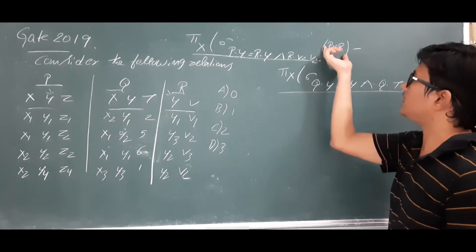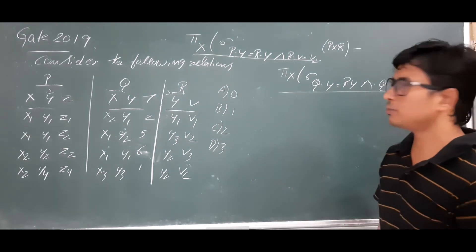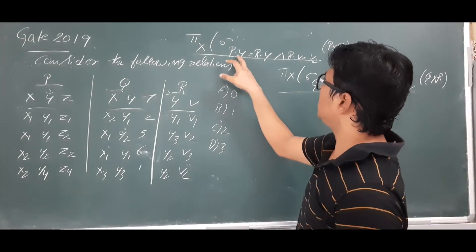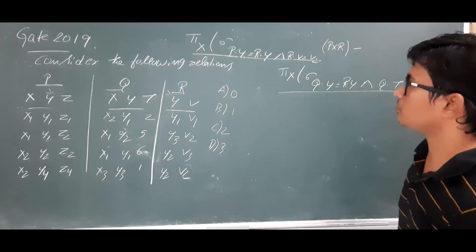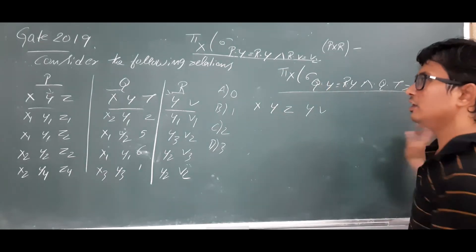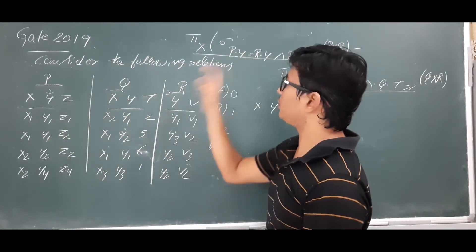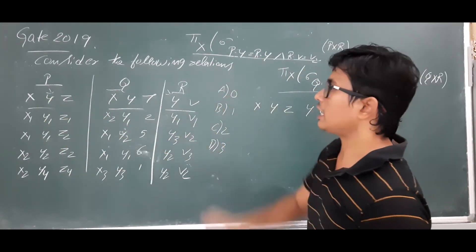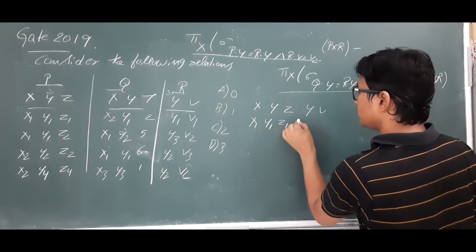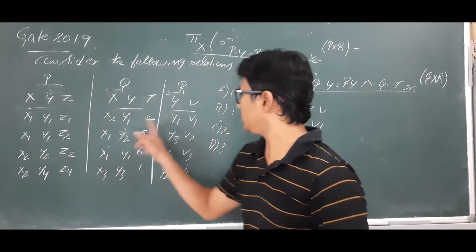They are asking to perform the cartesian product between P and R, apply a selection operator with condition P.y = R.y, then apply projection on attribute x. If I apply the cartesian product between P and R, I get attributes x, y, z, y, v in the result — five attributes total. Now P.y and R.y should be equal. Where P.y = y1 and R.y = y1, we select those tuples: x1, y1, z1, y1, v1 and so on.